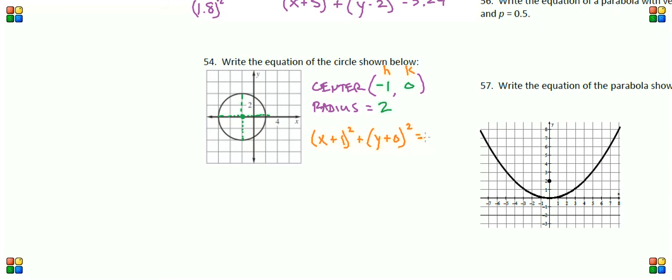Now the question is, what is this value going to be? Well, we know that in our equation for a circle, this is going to be r squared. So since our radius is two, all we have to do is figure out what two squared is, which is equal to four. And so our radius squared is four. So our equation for this circle is x plus one squared plus y plus zero squared equals four.